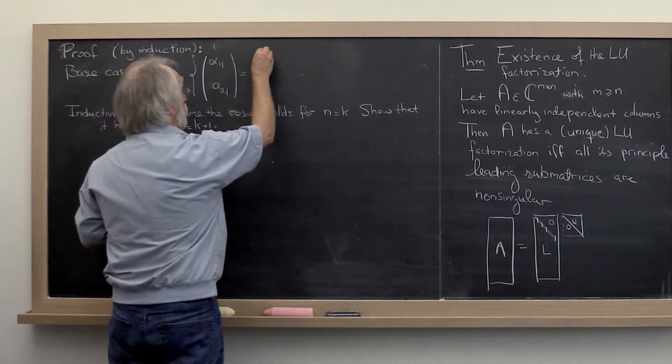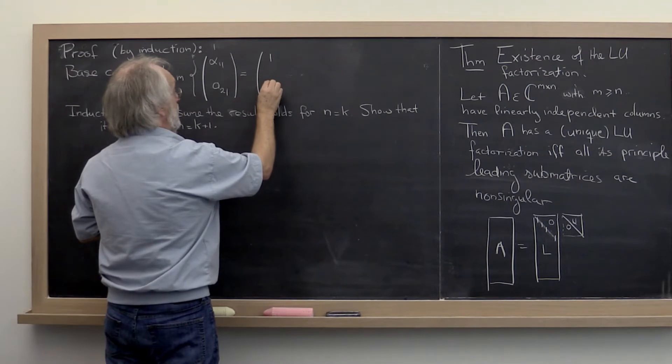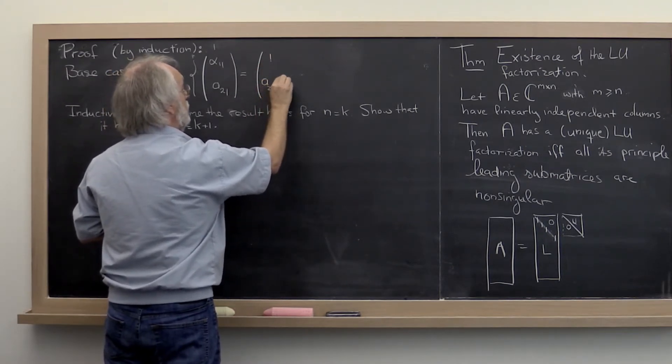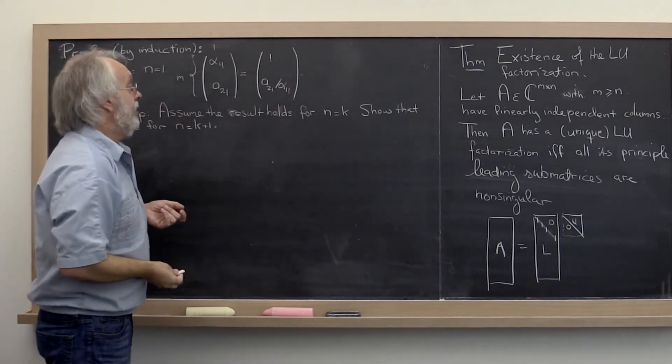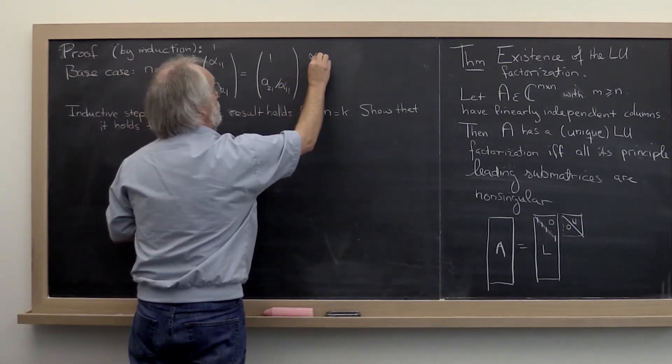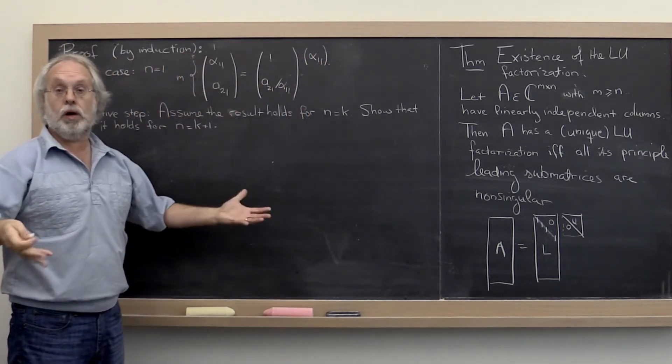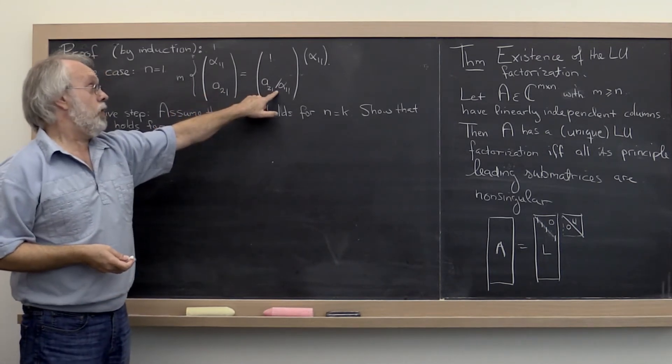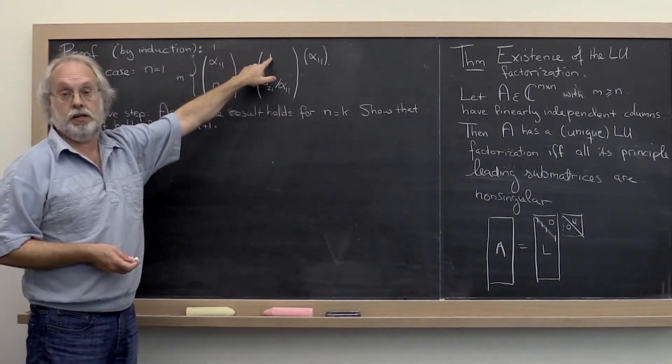So we can now write down what its LU factorization is. For L, it is the matrix 1. Remember it has to have 1s on the diagonal. And a21 divided by alpha11 below it. And then right here U is just the element alpha11. And what I've just done is I've written down what its LU factorization is. And that's really the only possible way of writing down the LU factorization, given that this element must be 1. So it's unique.